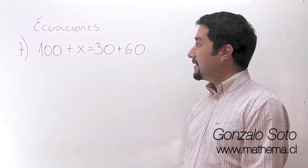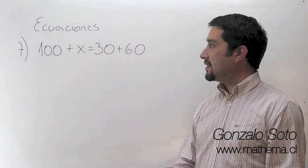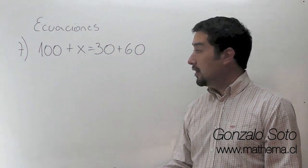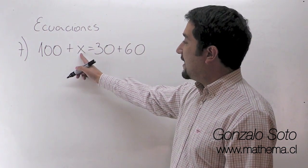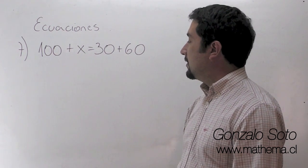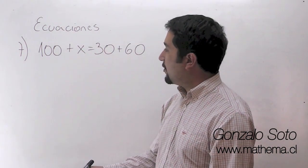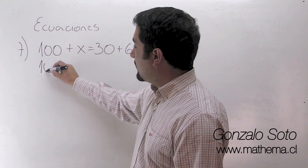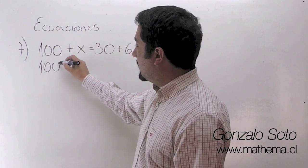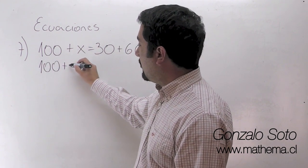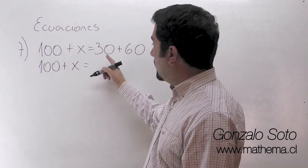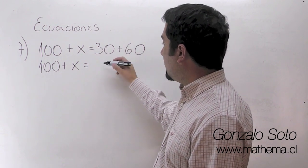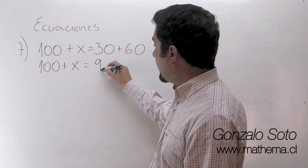En el ejercicio 7 tenemos números que son un poco más grandes a los que habíamos estado trabajando. Ahora tenemos que nuestra incógnita es x. Lo que vamos a hacer es que este lado lo vamos a dejar tal cual y estos dos los vamos a sumar. 30 más 60 son 90.